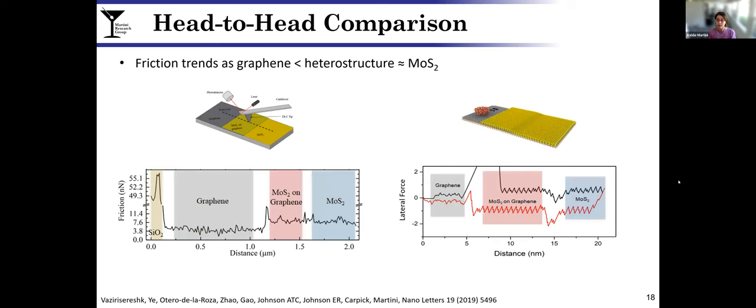Shown here is a result. On the left you're looking at the experiment and the right is the simulation. You can already right away see, these are just single scan lines, that the friction of the MoS2 appears to be a little higher than the friction on the graphene in both the simulations and experiments.